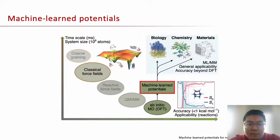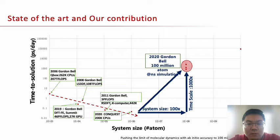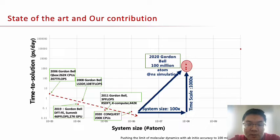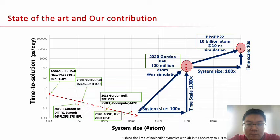Machine learning potentials are a promising approach which has ab initio accuracy but lower computational complexity. The work of the 2020 Gordon Bell Prize improves 1,000 times in the temporal scales and 100 times in the spatial scales, achieving 100 million atoms simulation using machine learning based molecular dynamics. The software they optimized is DeePMD. In this work, we continue to optimize this software and further improve 100 times in spatial scales and 10 times in temporal scales.